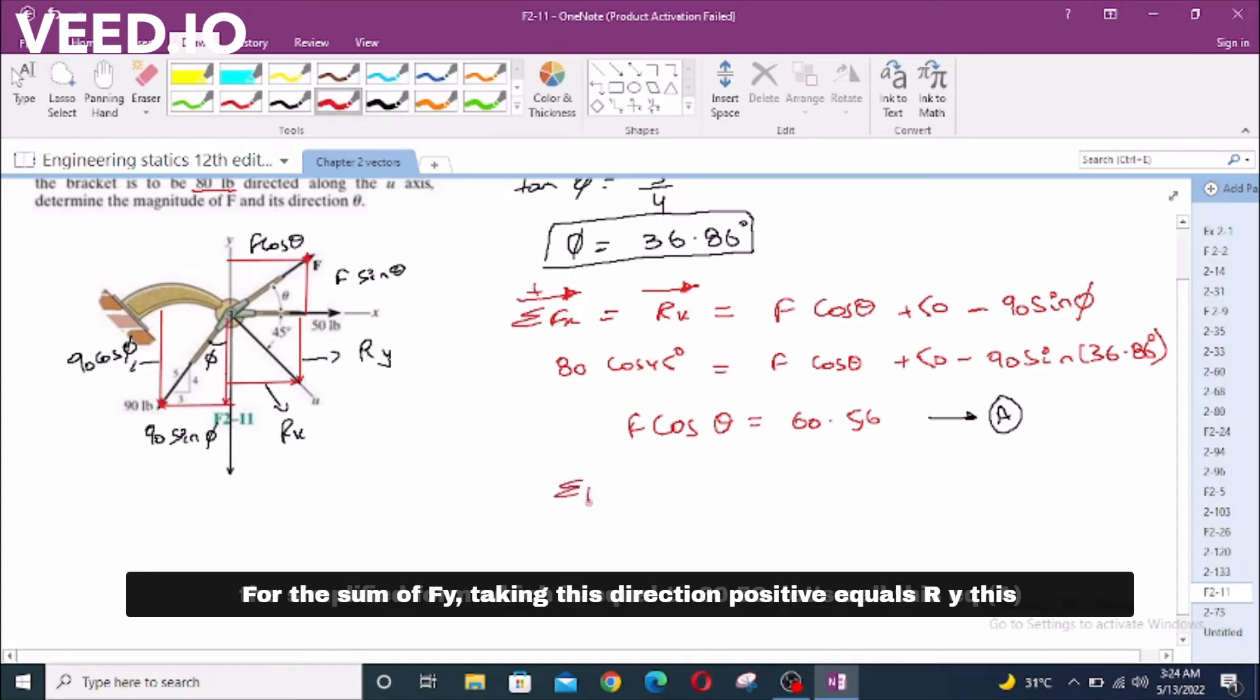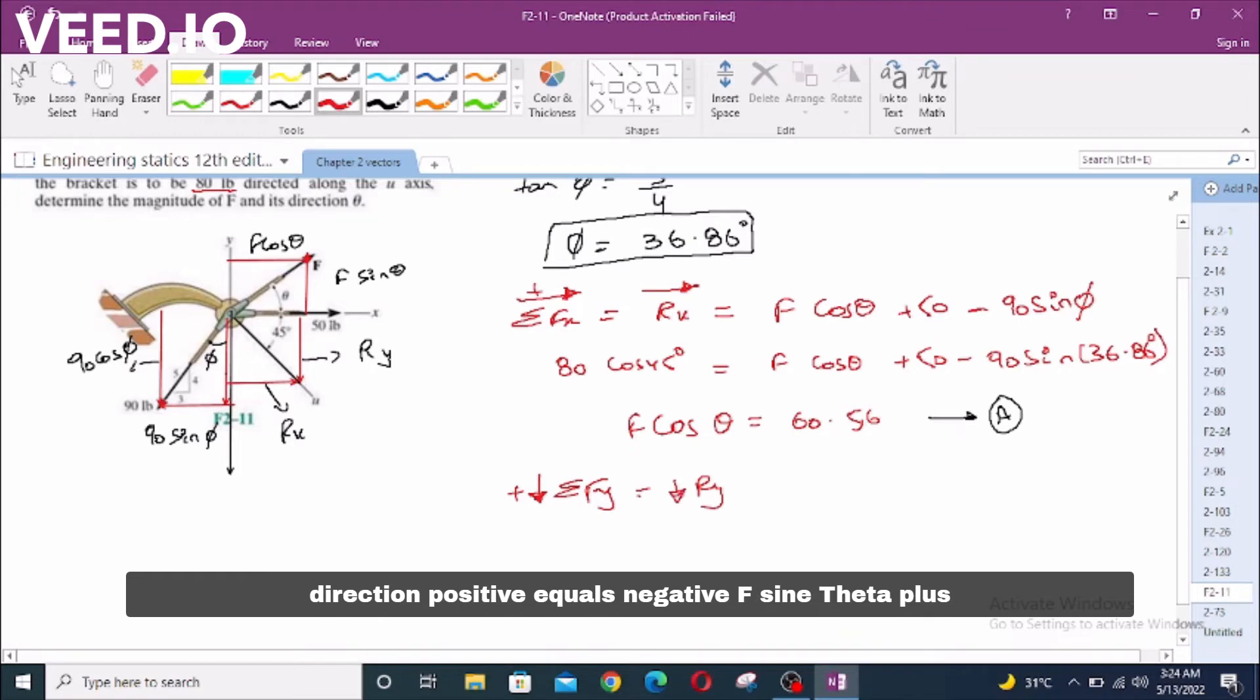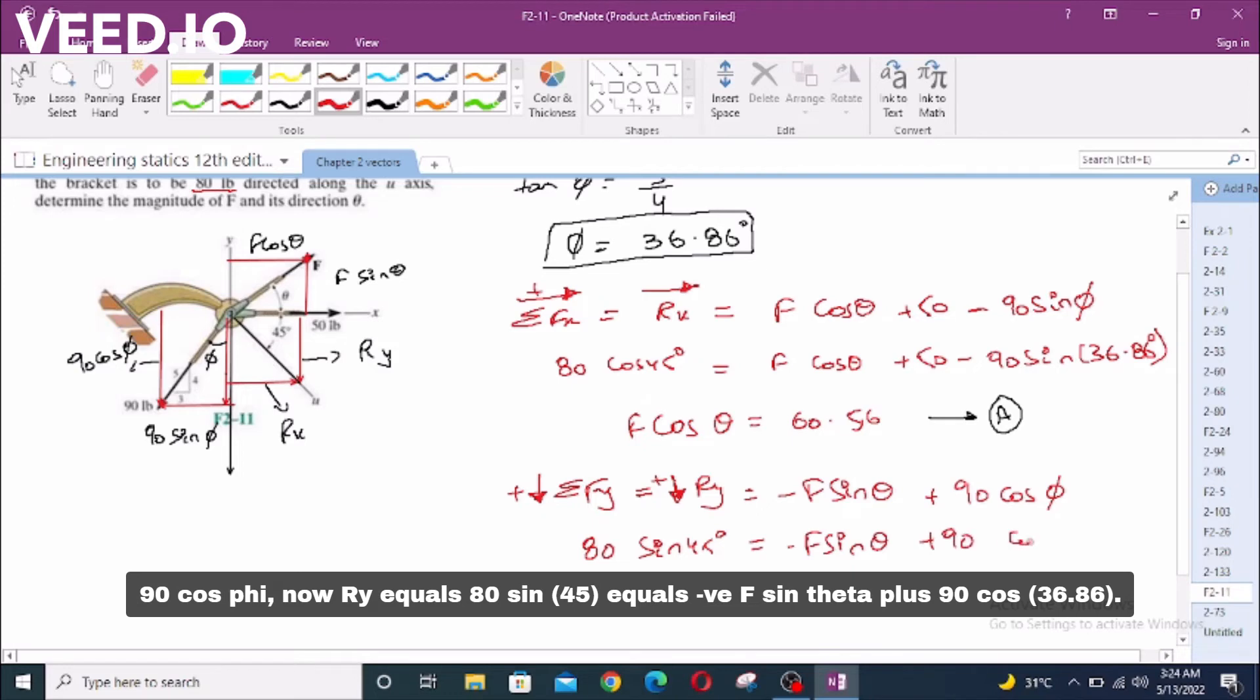For sum of Fy, taking this direction positive, equals Ry. This direction positive equals negative F sin theta plus 90 cos phi. Now Ry equals 80 sin 45 degrees equals negative F sin theta plus 90 cos 36.86 degrees.